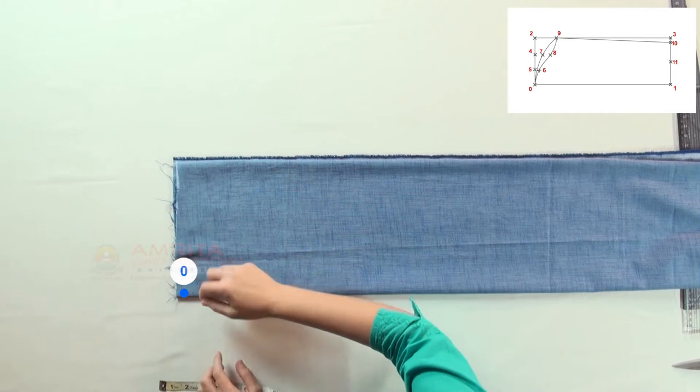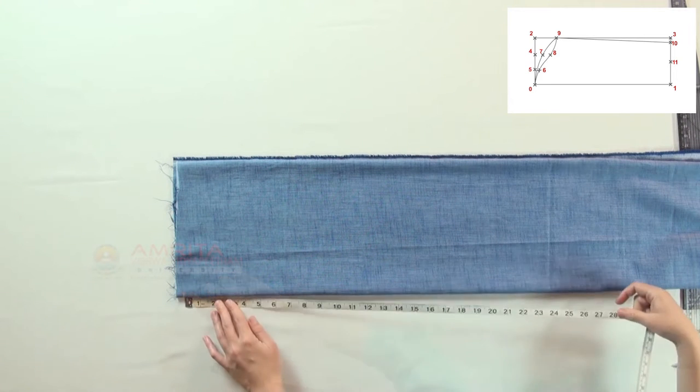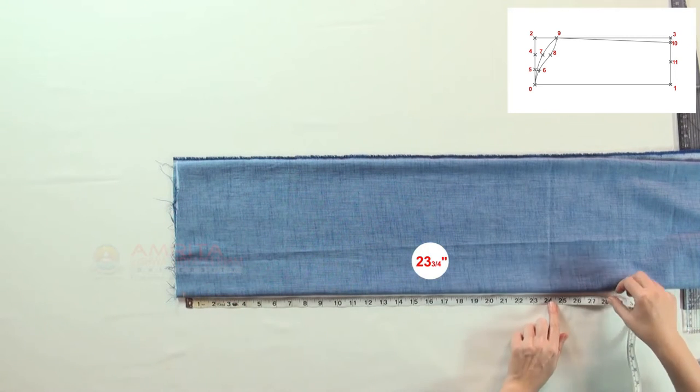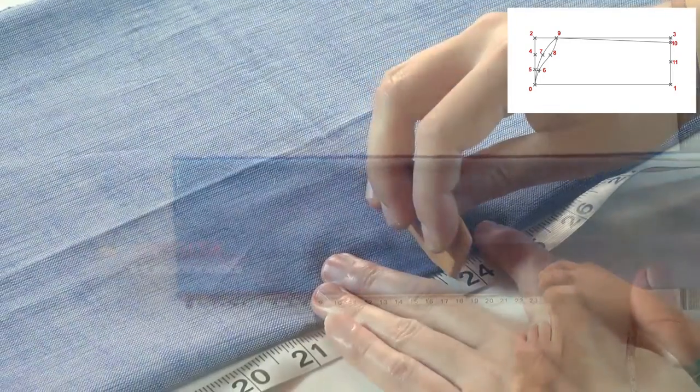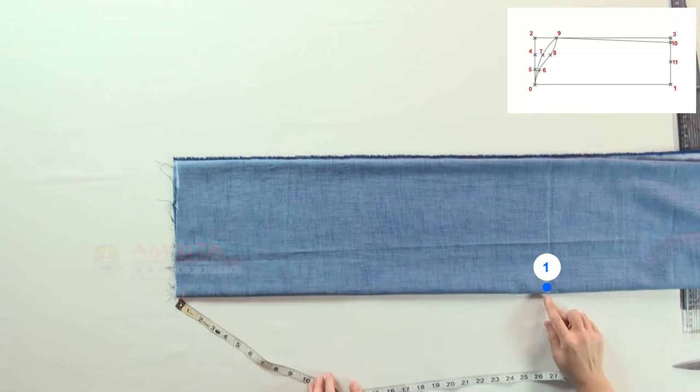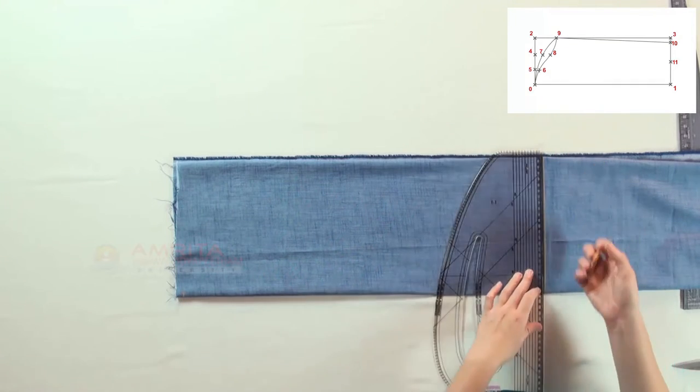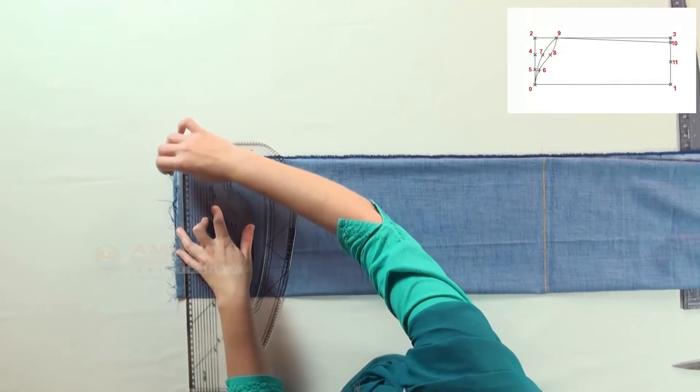Mark a starting point zero. From point zero, measure 23 3/4 inches and make a mark. This is point one. From point zero and one, draw right angle lines to the fold.